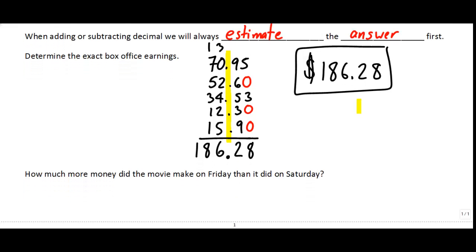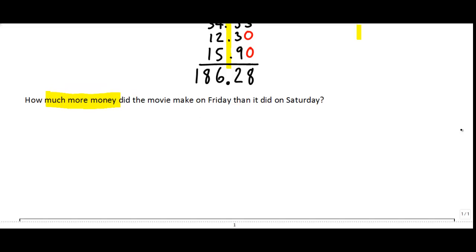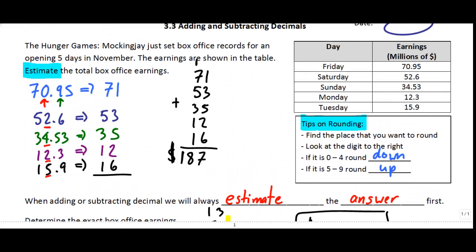Last example here. It says, how much more money did the movie make on Friday than it did on Saturday? How much more is really a question of difference. And if it's a difference, then we're talking about subtraction. So how much more did it make on Friday than on Saturday? We're looking for the difference between these two numbers. And so that's going to be a subtraction.